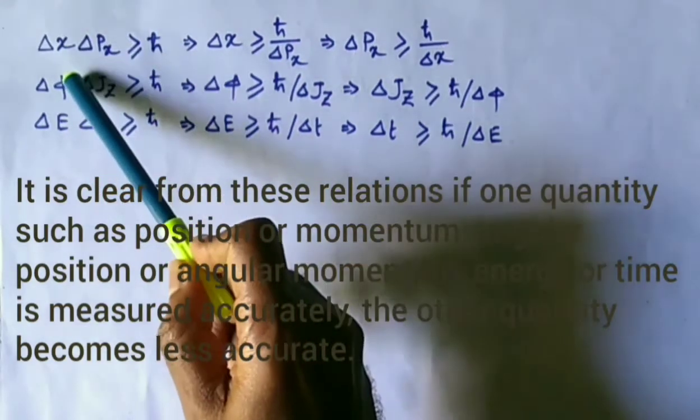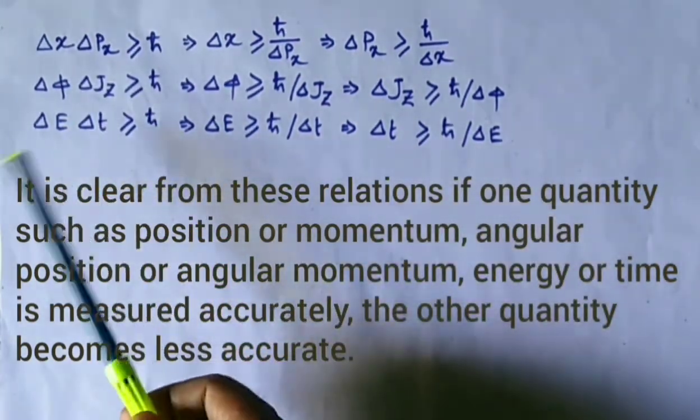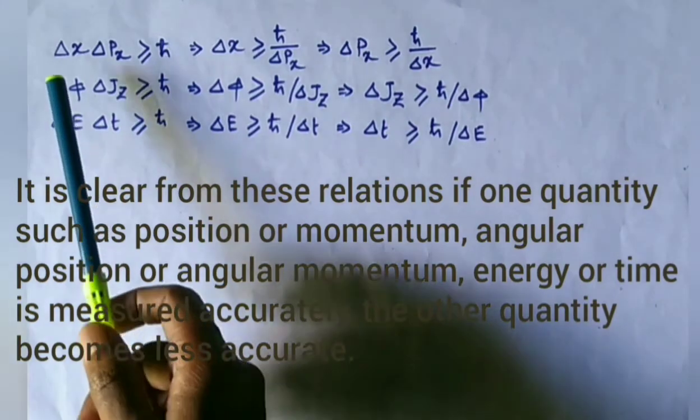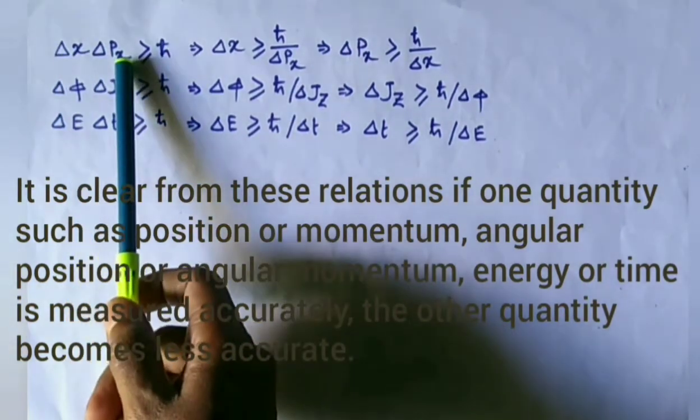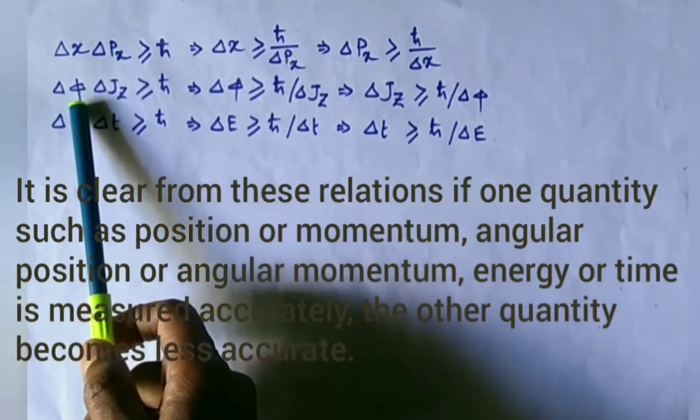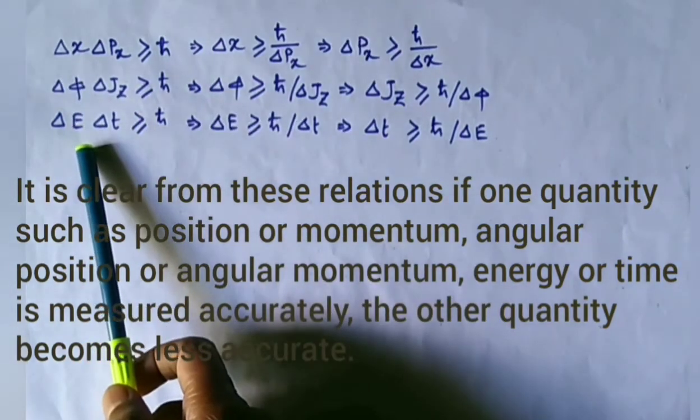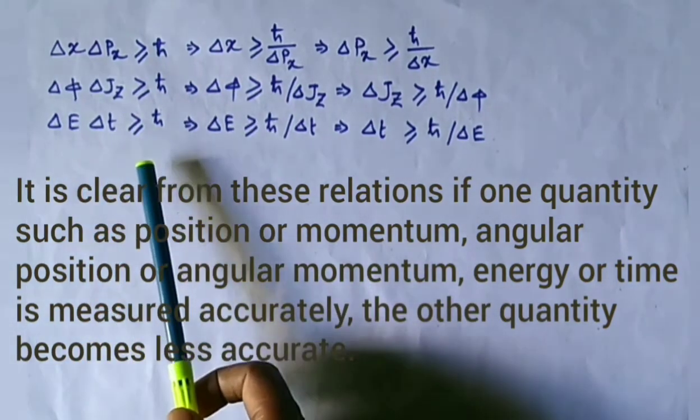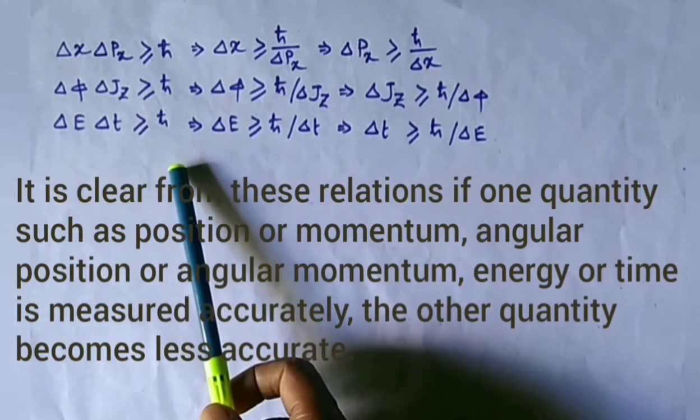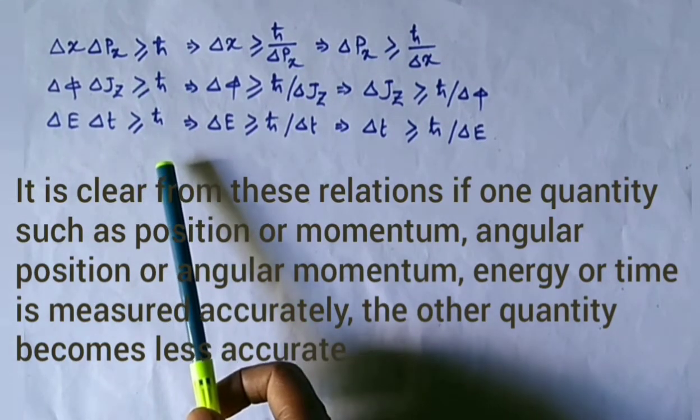It is clear from these relations that if one quantity such as position or momentum, angular position or angular momentum, energy or time is measured accurately, the other quantity becomes less accurate.